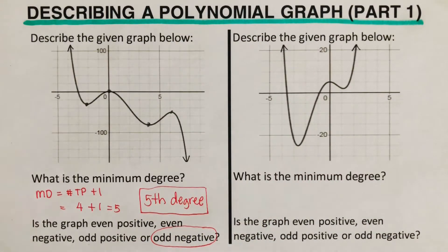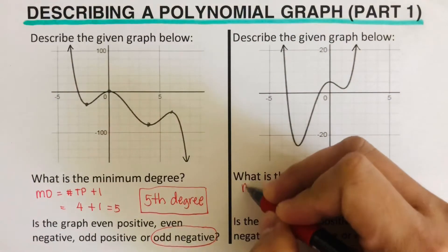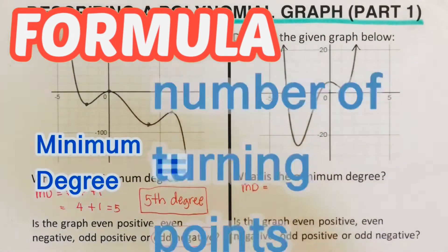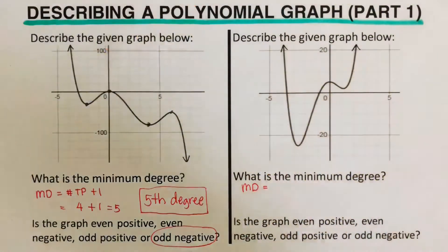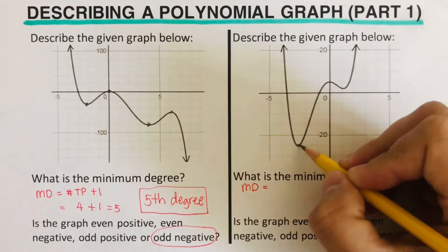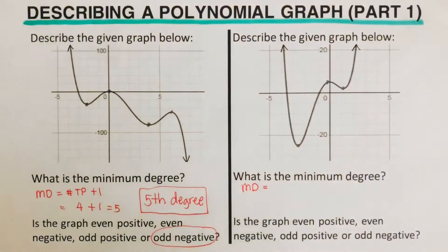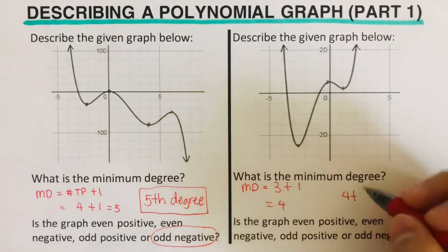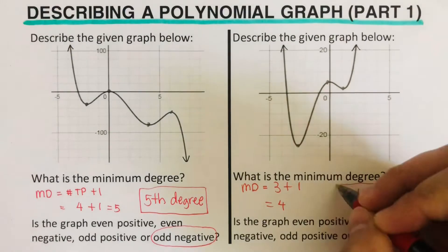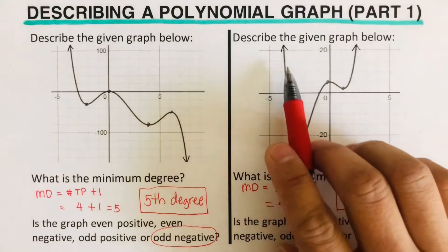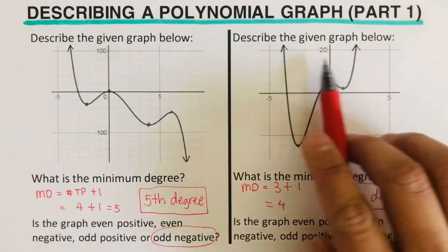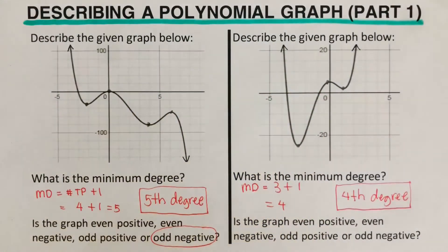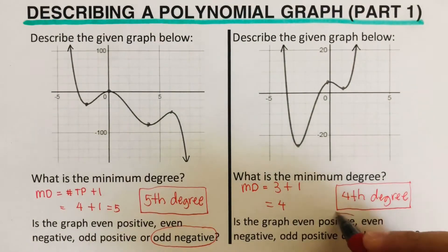Okay, so we go over the next problem here. What is the minimum degree? Again, the formula for minimum degree is number of turning points plus one. We determine the number of turning points: one, two, and three — so there are three turning points, giving us a minimum degree of four. Since both the left side and the right side of the graph are directed upward, this is even positive.